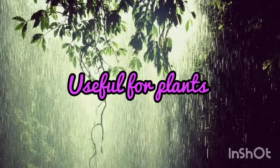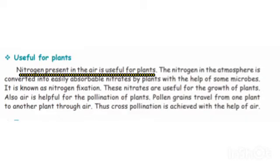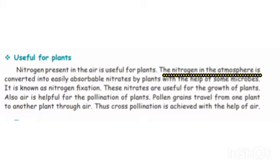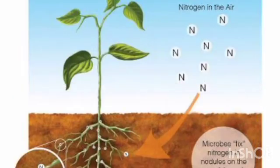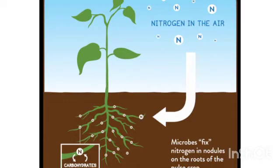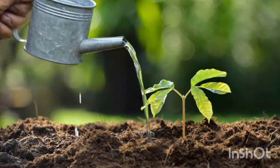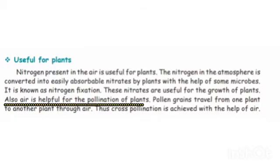Next, air is useful for plants. Nitrogen present in the air is useful for plants. The nitrogen in the atmosphere is converted into easily absorbable nitrates by plants with the help of some microbes. Also, air is helpful for pollination of plants.